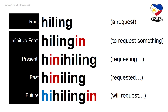Root word: hiling — meaning a request. Infinitive form: hilingin — to request something. Present tense: hinihiling — requesting something. Past tense: hiniling — requested something. Future tense: hilingin — will request something.